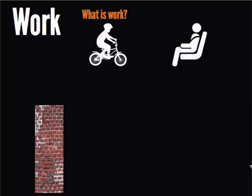Look at the two pictures below. You've got a kid on a bicycle and a kid strapped into a seat. If I ask you the question what is work, I think it's a pretty obvious answer that you would say the kid on the bike is doing work, whereas the guy in the seat is not doing work.